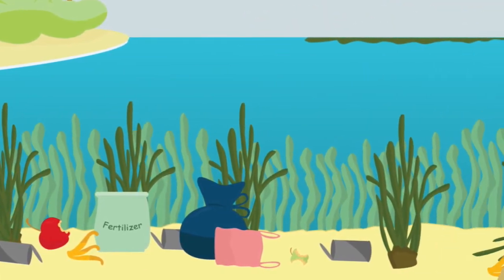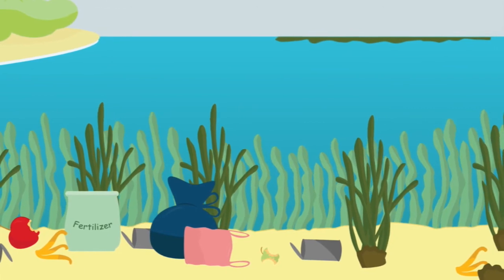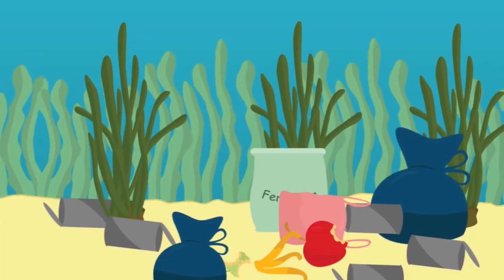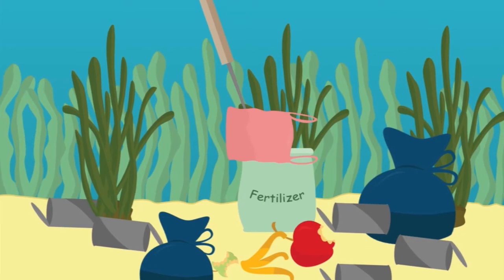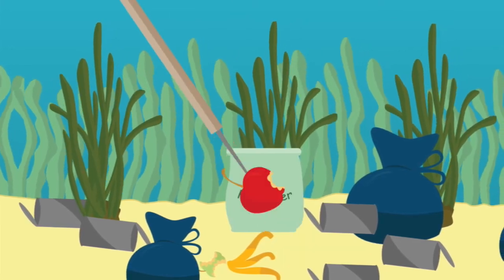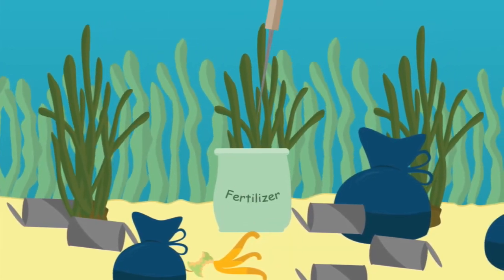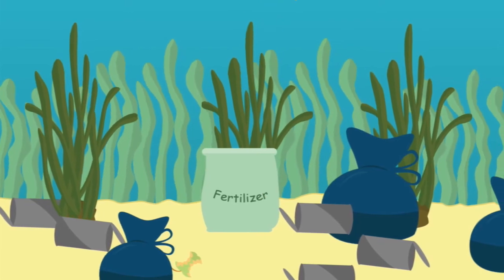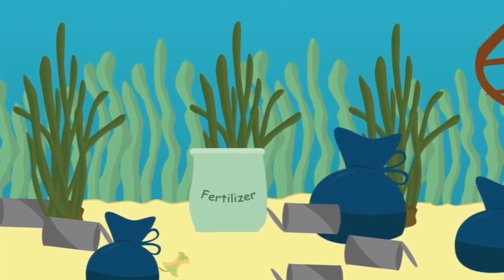Dredging and various forms of pollution also threaten seagrasses. But the good thing is there are ways we can help bring balance to the ecosystem. You can avoid disposing food waste into the sea, using artificial fertilizers and herbicides, and discarding plastics.